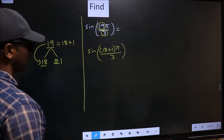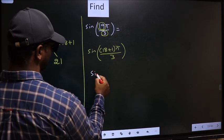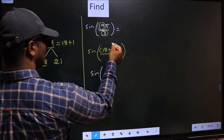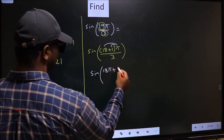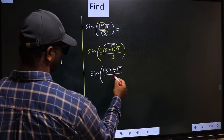Next, sin. Now you should open up the brackets. So you get 18π plus 1π by 3.